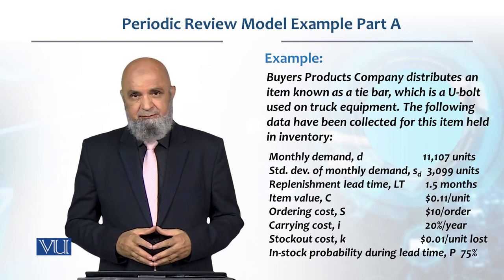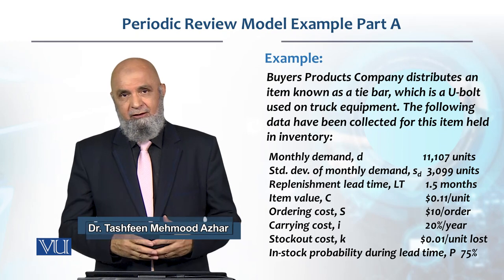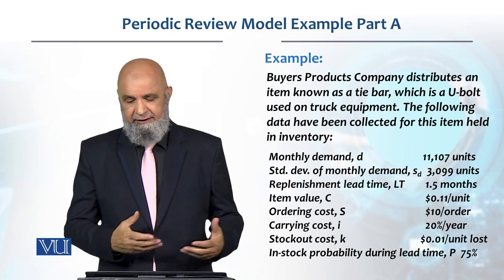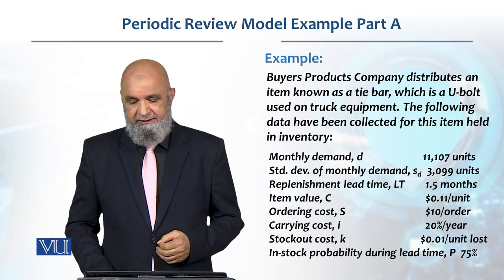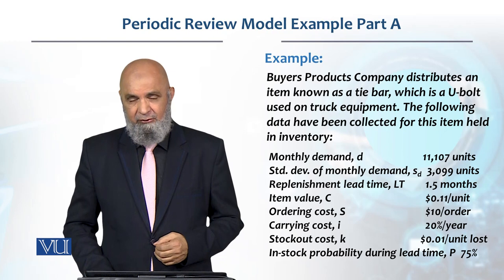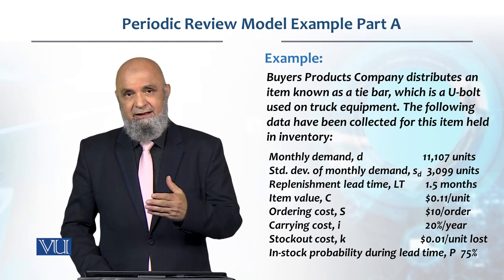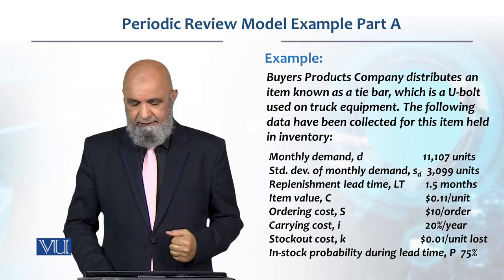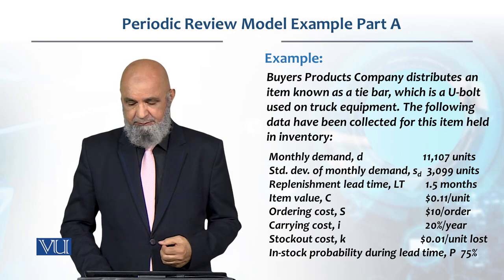The monthly demand is 11,107 units. We need to convert this into annual demand — on that basis we can calculate the review period, so we multiply by 12. The standard deviation of monthly demand is 3,099 units, which again we need to convert into standard deviation of demand during review period and lead time. The lead time is 1.5 months. Item cost is $0.11 (11 cents per unit).